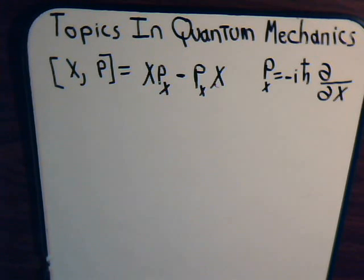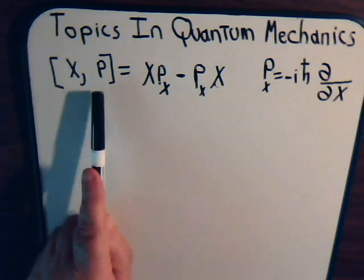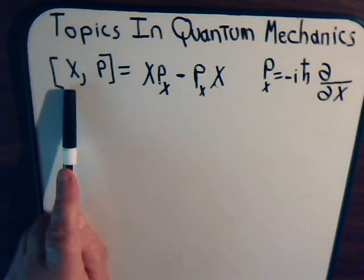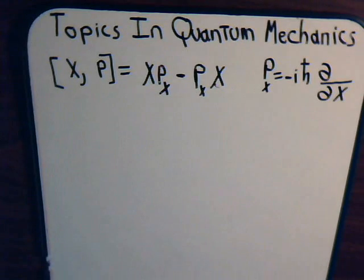Now the commutator then is just this times this minus this times you're operating on this. That's it when it's expanded out. So what exactly does it mean? And the best way to understand that is, let's examine what effects the commutator has on a function.